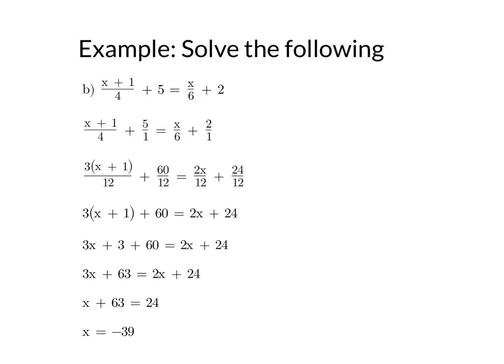Minus the 2x from both sides, so I get x plus 63 equals 24, and then finally minus 63 from both sides, to get me x equals minus 39.